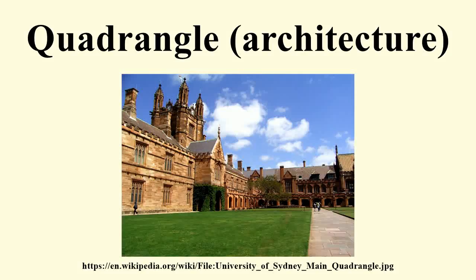In architecture, a quadrangle is a space or courtyard, usually rectangular in plan, the sides of which are entirely or mainly occupied by parts of a large building. The word is probably most closely associated with college or university campus architecture, but quadrangles may be found in other buildings such as palaces.